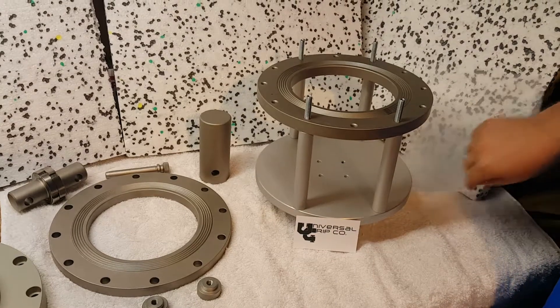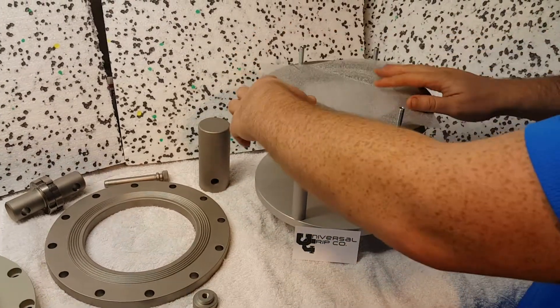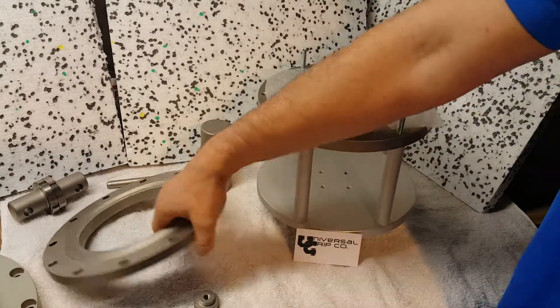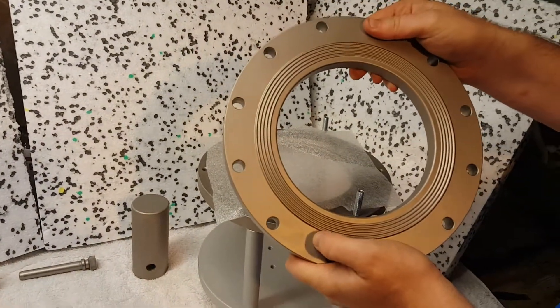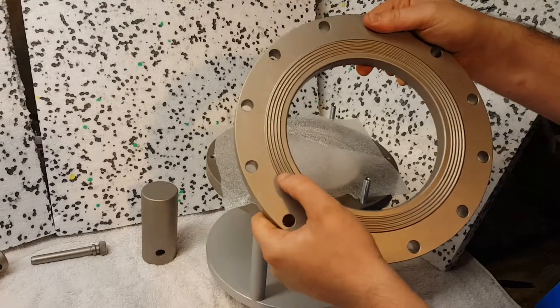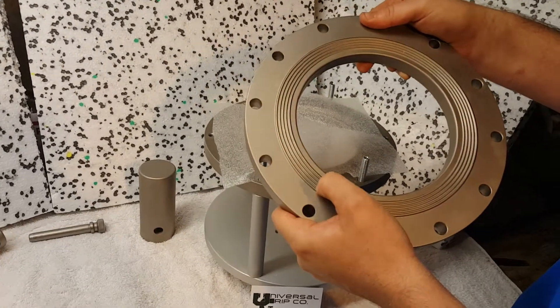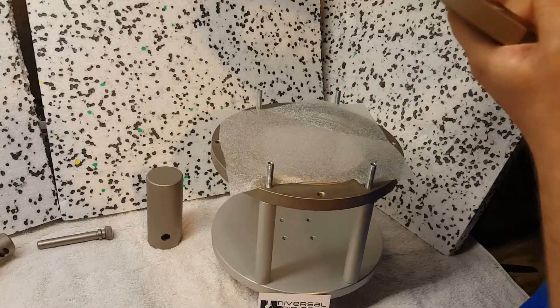We'll go ahead and load our sample onto the fixture here. Then we have our locking ring, which is 150 millimeters in diameter according to the spec. It has these ridges on the side here to help grip onto the sample.